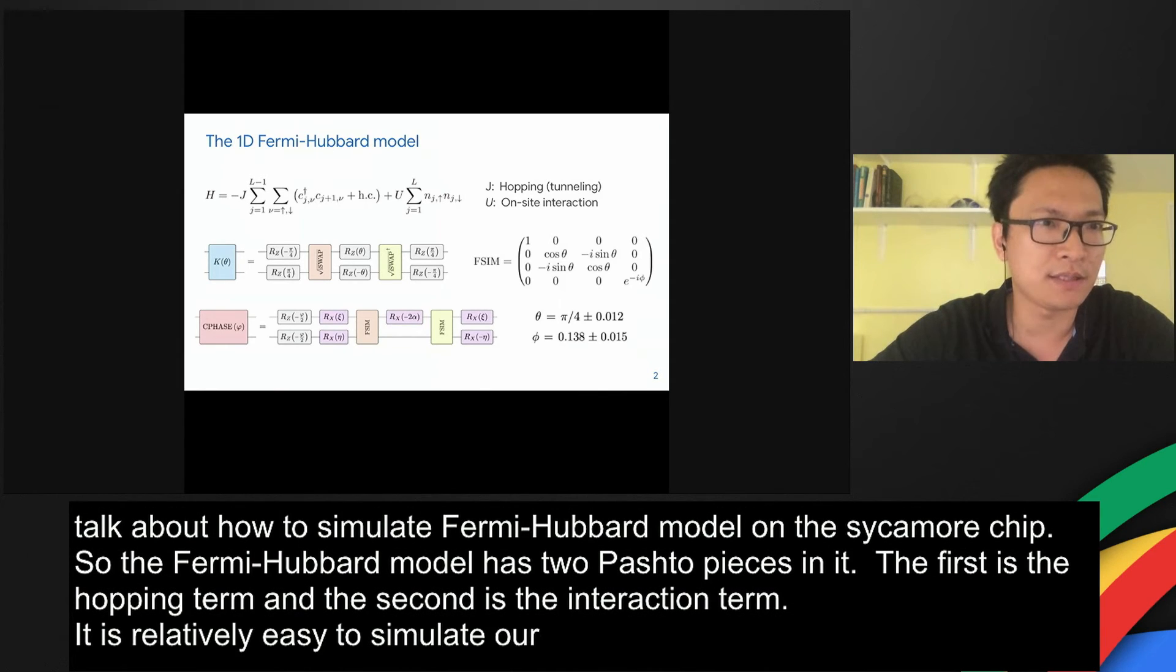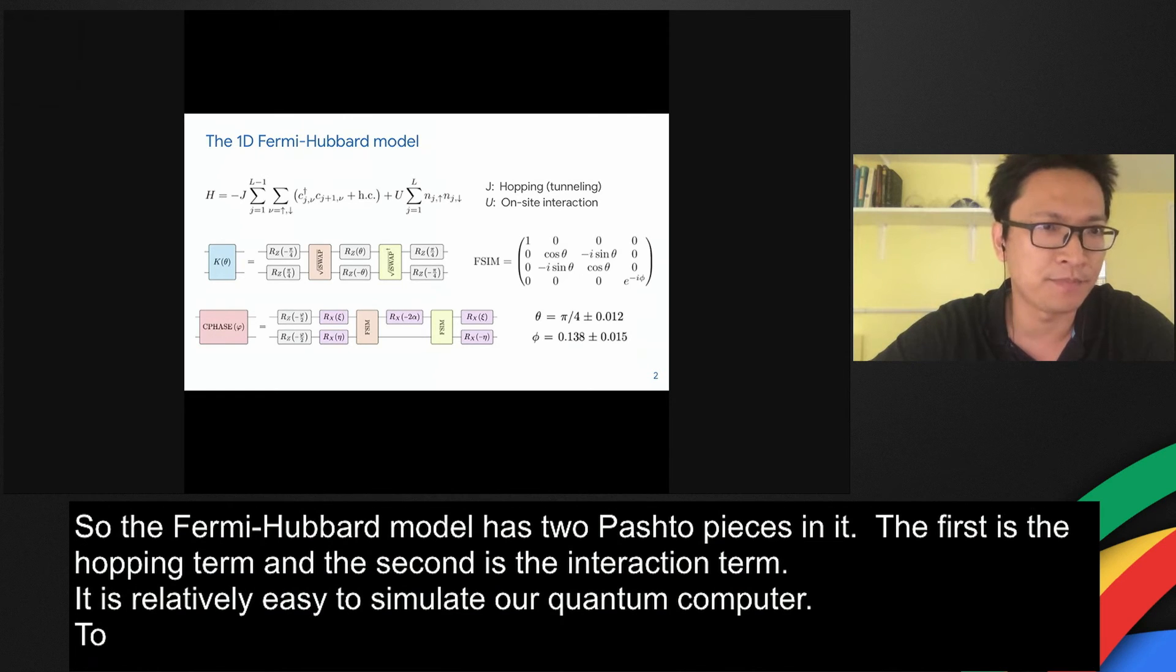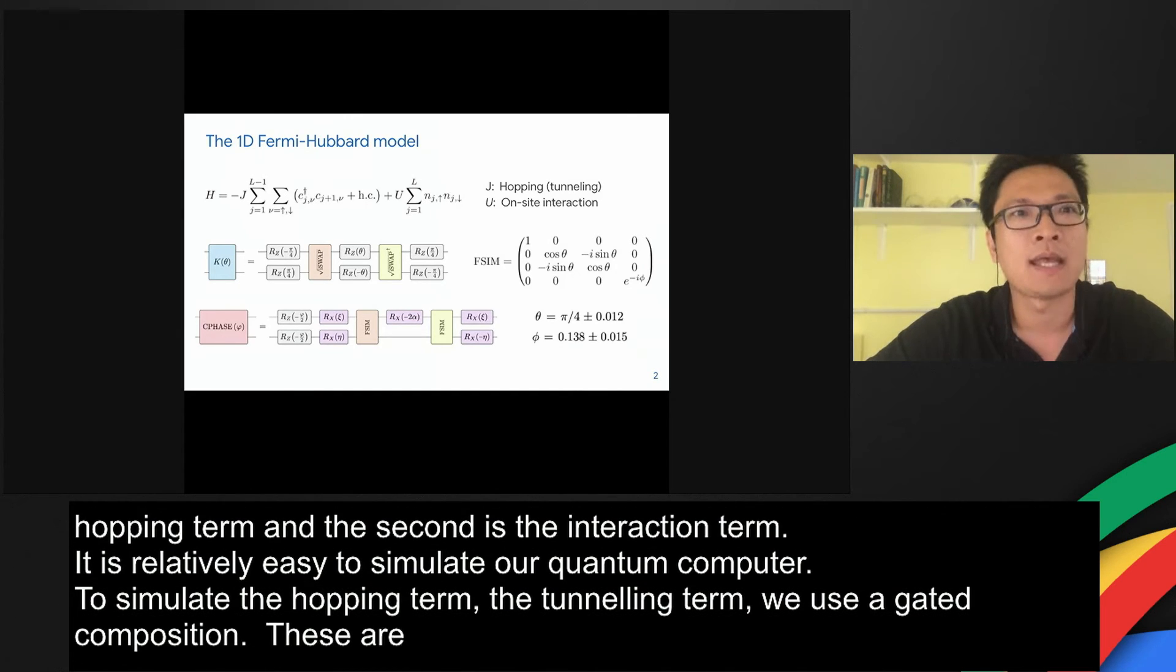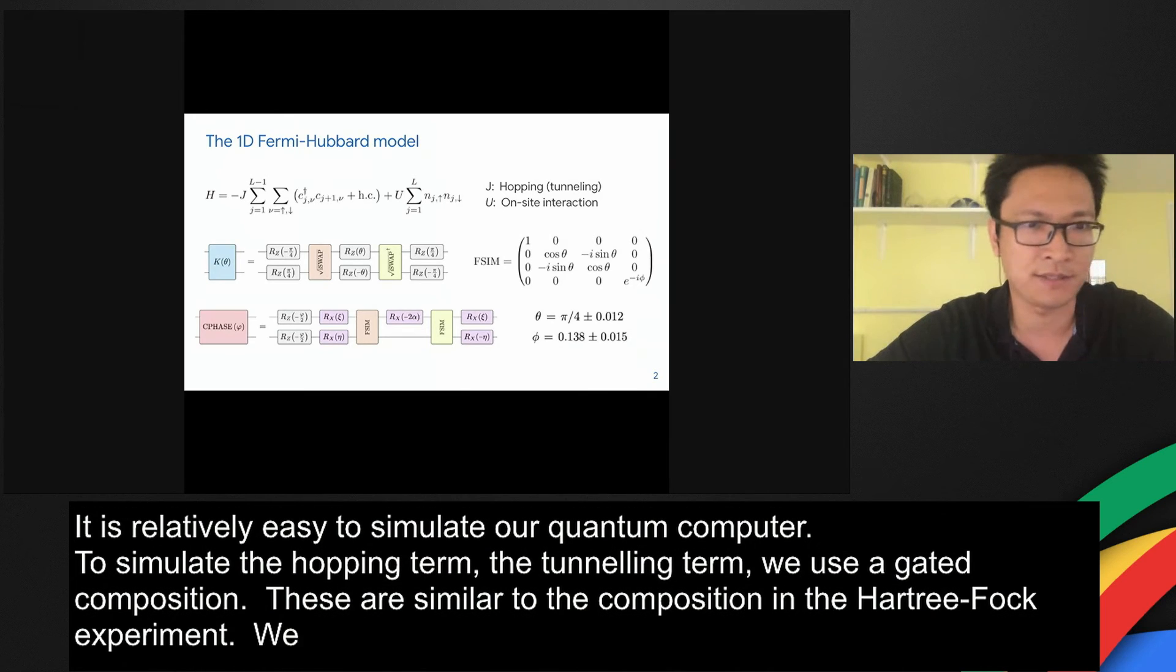To simulate the hopping term, aka the tunneling term, we use a gate decomposition using the square root i-swap and the single qubit z rotations. These are similar to the gate decomposition in the Hartree-Fock experiment. We also need to simulate the interaction term. To simulate that term, we use the c-phase gate.